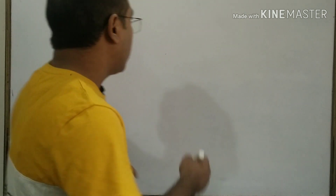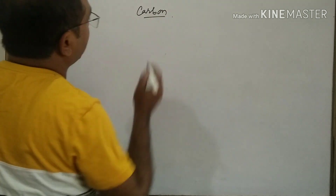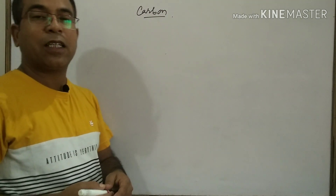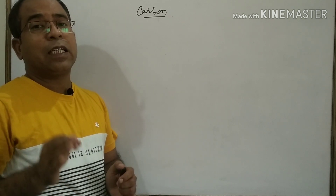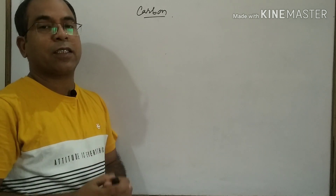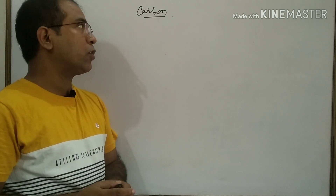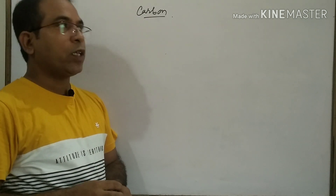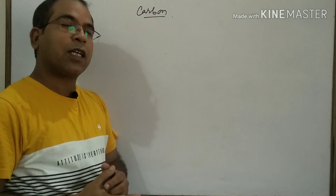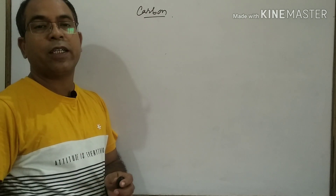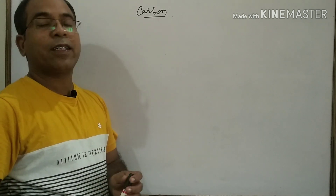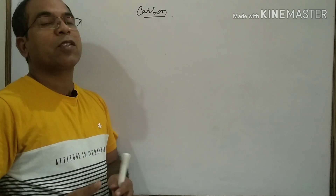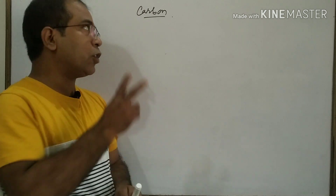The first chapter we are going to deal with is carbon. Why is carbon such a special element? Carbon has almost 3 million products. Organic chemistry depends on carbon. So carbon, which has 3 million compounds — what is the speciality, what is the uniqueness it has, that it can make so many compounds? It has 2 unique natures.